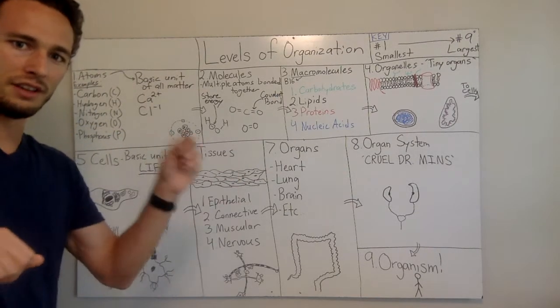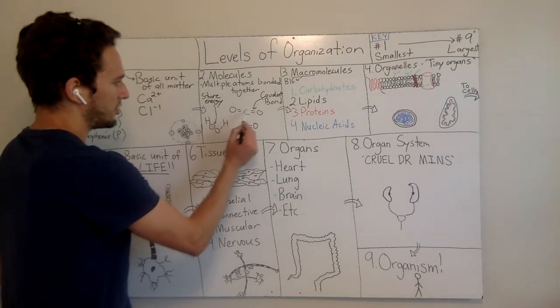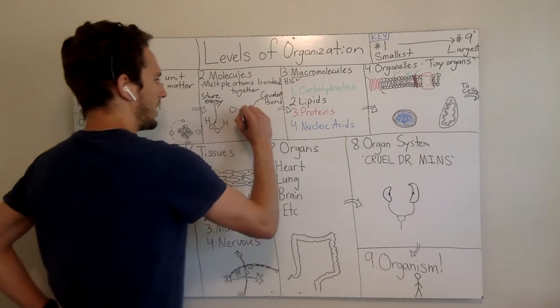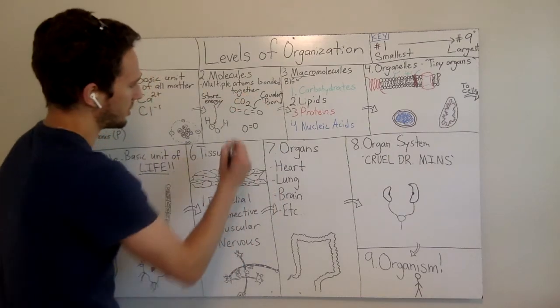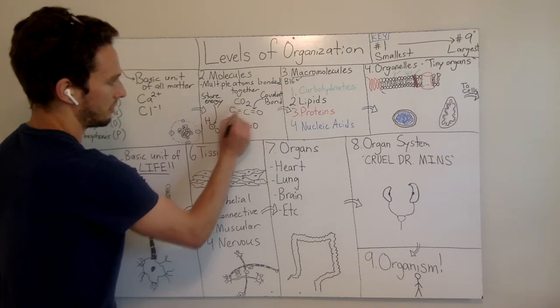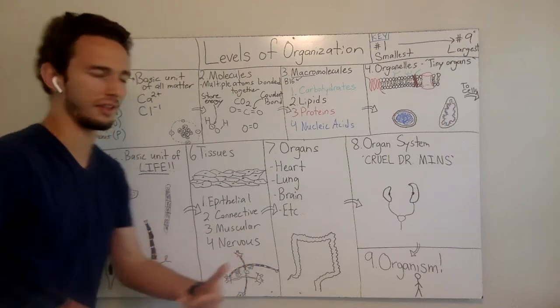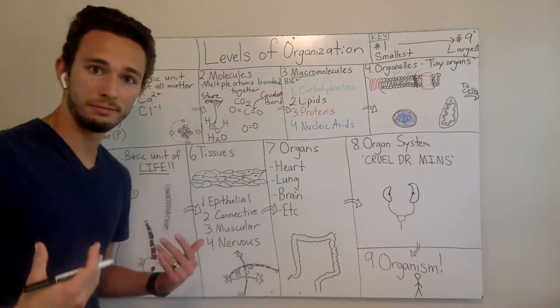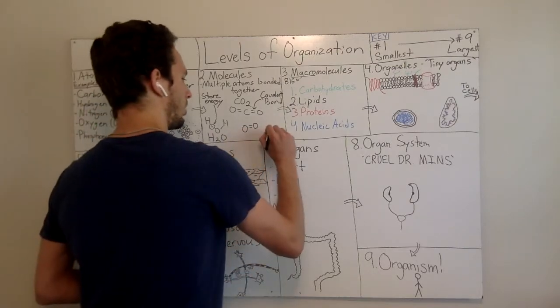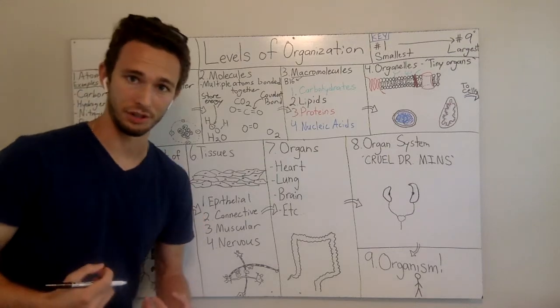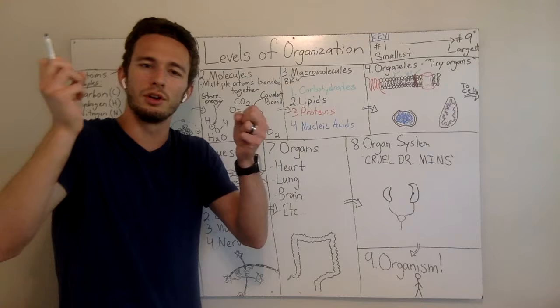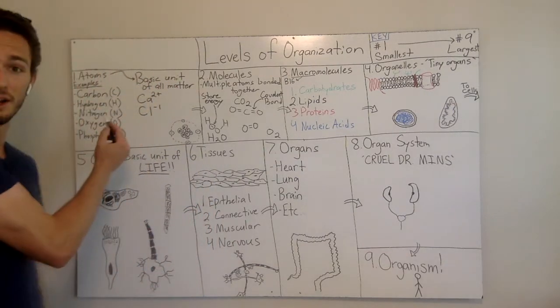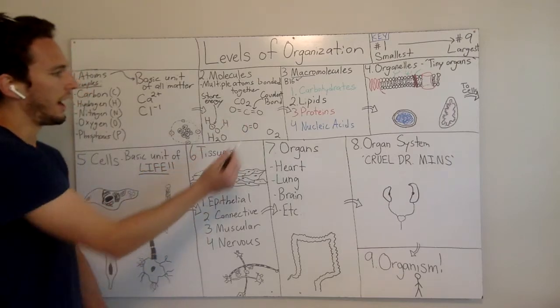So I've got a few different molecules up here. This would be written as CO2 because you have one C and you have two oxygen, carbon dioxide. Over here, we've got HOH, also known as H2O water. Two O's is O2, which this is an oxygen molecule. So even though it's just one atom type, if you have two or more atoms together, it's considered a molecule.